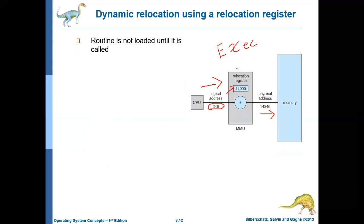If the binding happens at execution time, then the logical address and the physical address will differ. But this will not be the case if binding happens at compile time or load time. In that case, you will know the starting address — before compiling or before loading — so the CPU will directly generate the correct address, meaning the logical address itself will be the physical address.